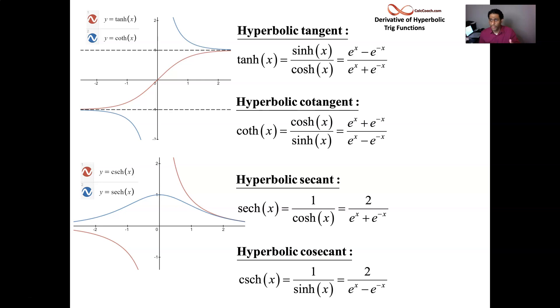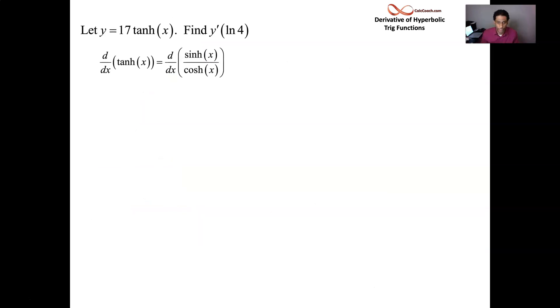Let's get the derivative of every one of them. We have the derivative of hyperbolic sine and derivative of hyperbolic cosine. From that, we can get everything. Let's get the hyperbolic tan's derivative. So y is equal to hyperbolic tan times 17. And our job is to figure out what y prime is at the natural log of 4.